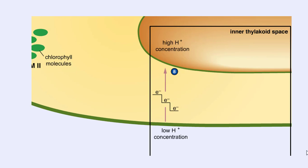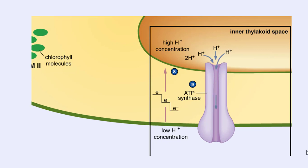Protons diffuse from a region of higher concentration to a region of lower concentration by flowing through an ATP synthase enzyme complex embedded in the thylakoid membrane. The proton flow supplies sufficient energy to generate ATP from ADP and Pi, inorganic phosphate.